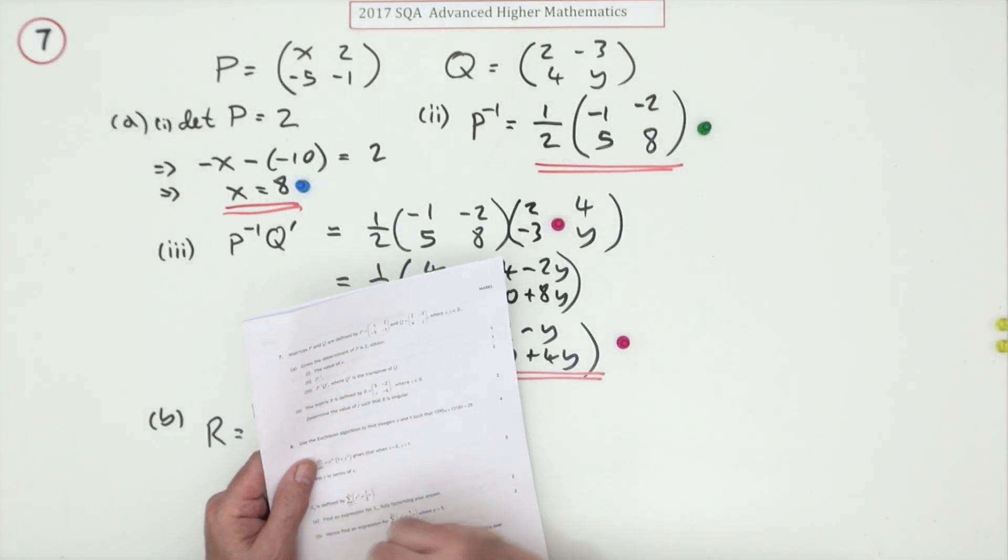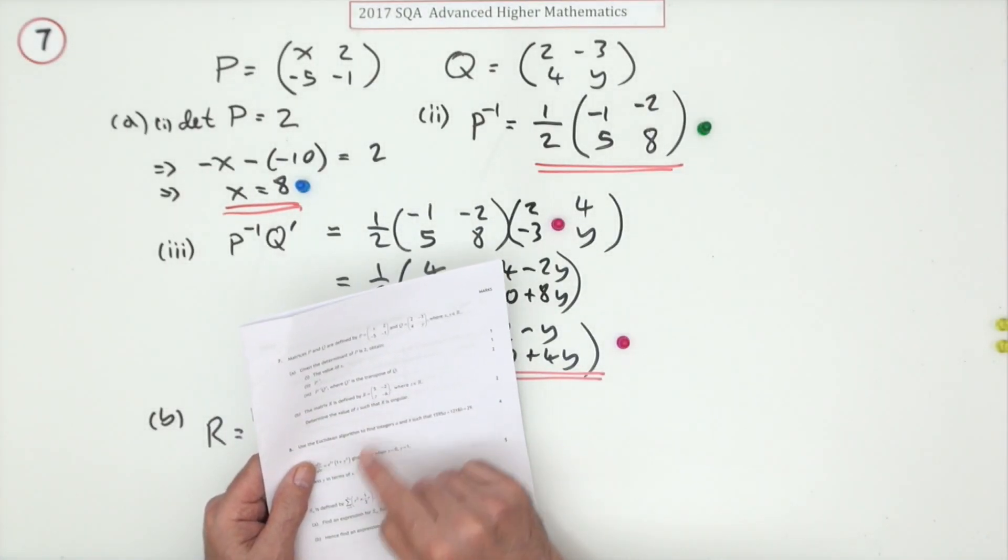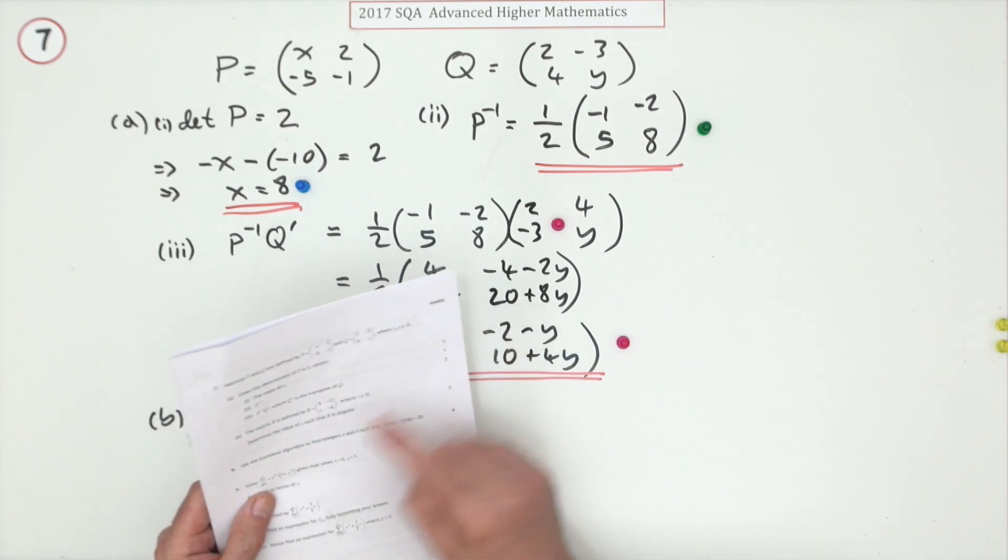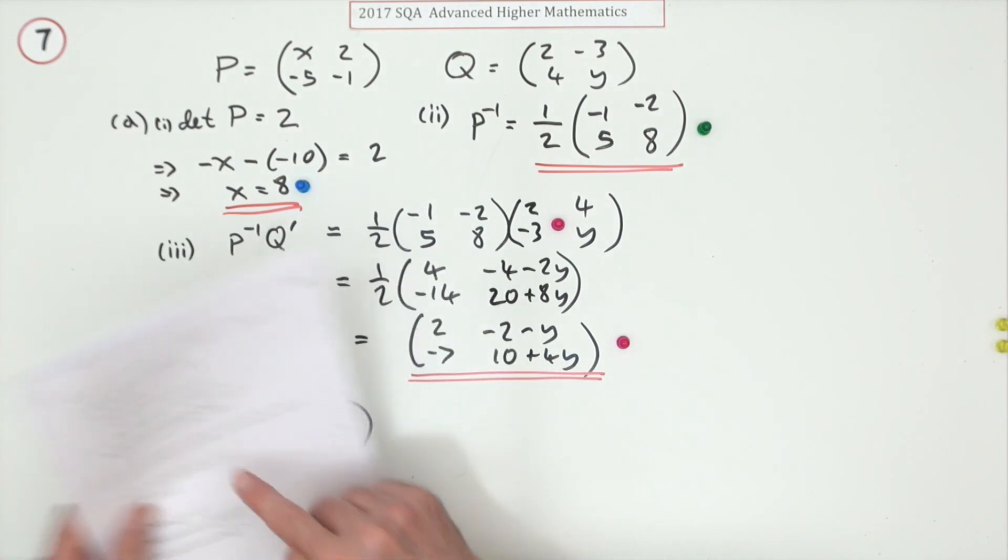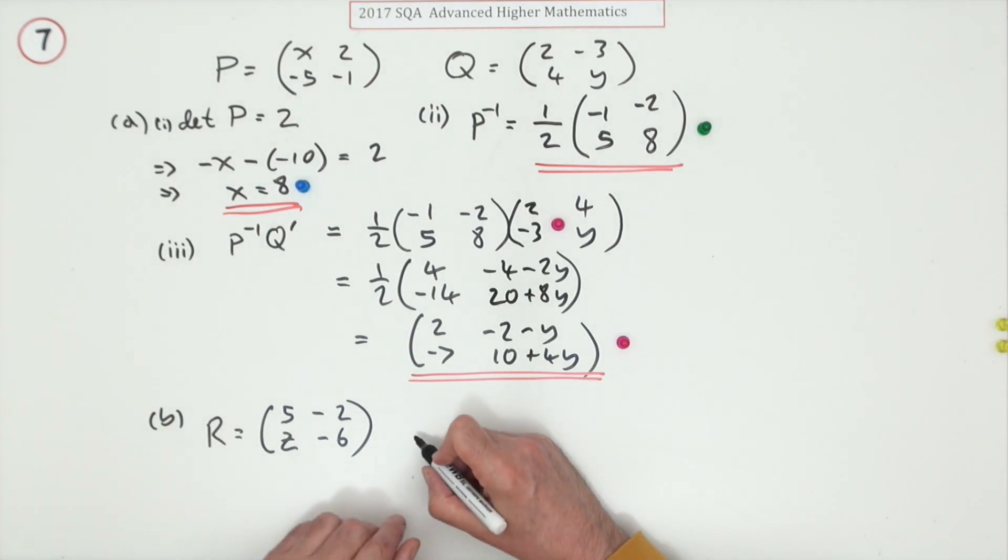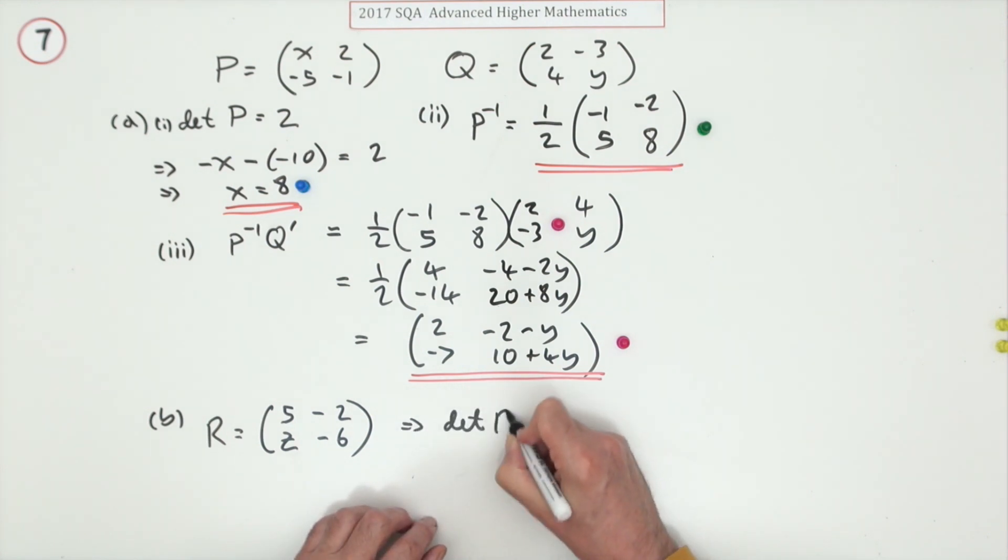Part B: you're given this new matrix R: five, negative 2z, negative six. And it says what is z if R is singular? Well, singular means it'll have no inverse. It'll have no inverse if its determinant is zero. That means the determinant of R has to equal zero. That's the first mark for realizing that.